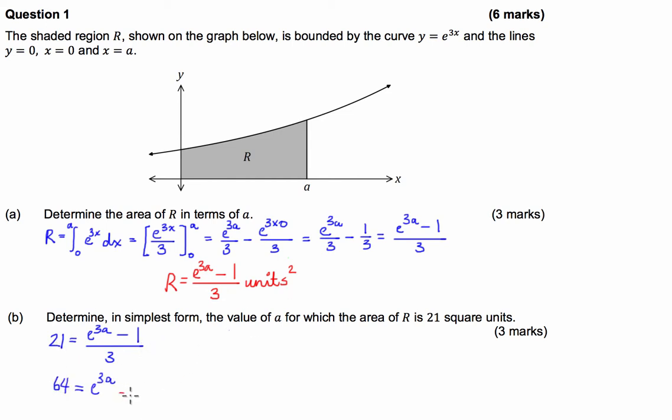Now from here, guys, I'm going to take the natural log of both sides, so I'm going to take the natural log of 64, and that's going to be equal to the natural log of e to the 3a.